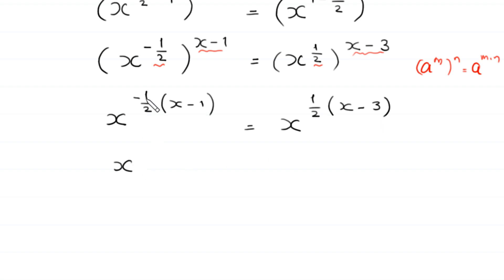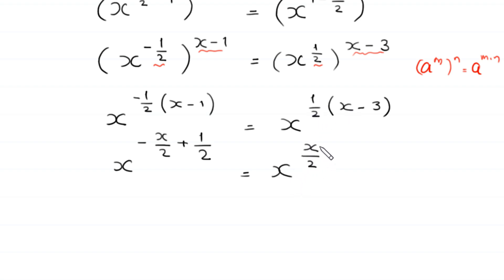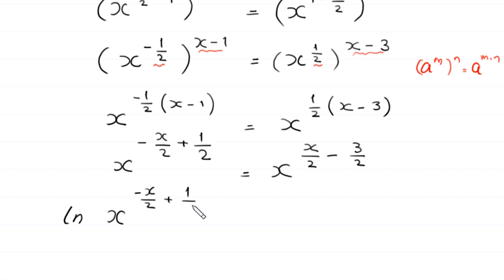Expanding, the left exponent becomes negative x over 2 plus 1 over 2, and the right exponent becomes x over 2 minus 3 over 2. Now we take the natural log of both sides: ln of x to the power negative x over 2 plus 1 over 2 equals ln of x to the power x over 2 minus 3 over 2.